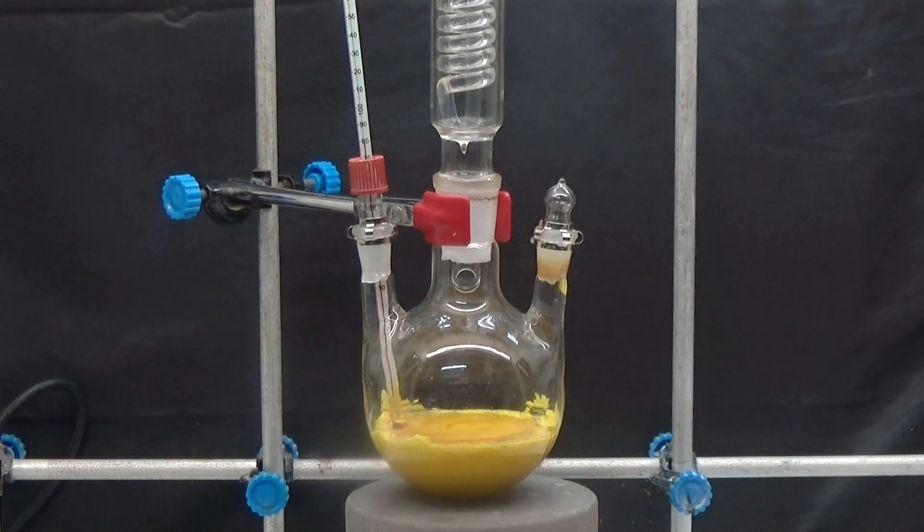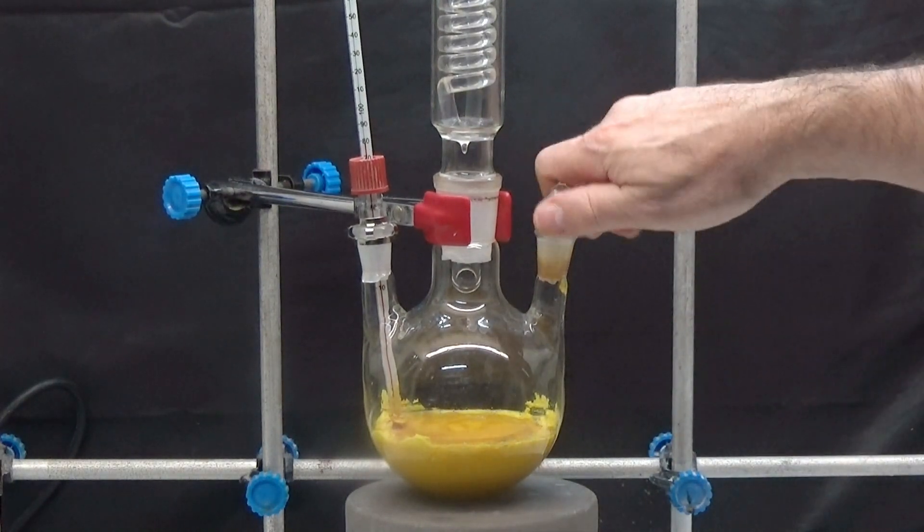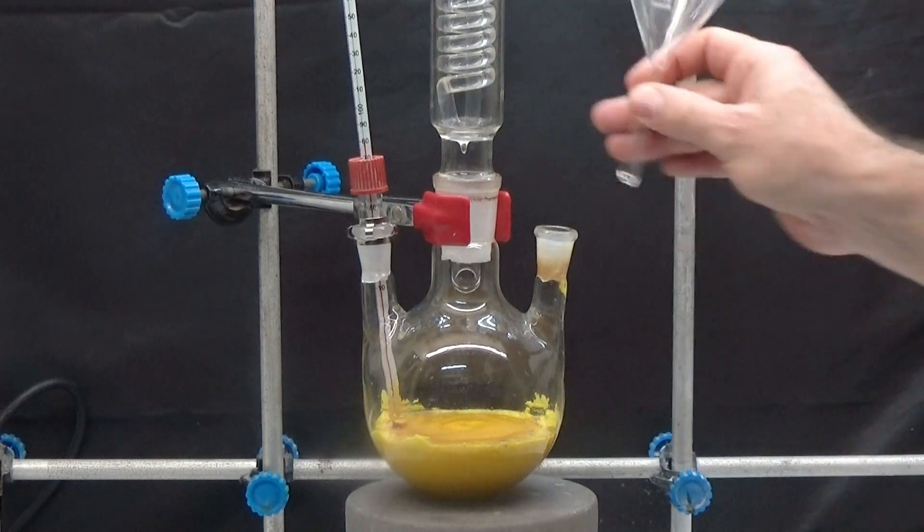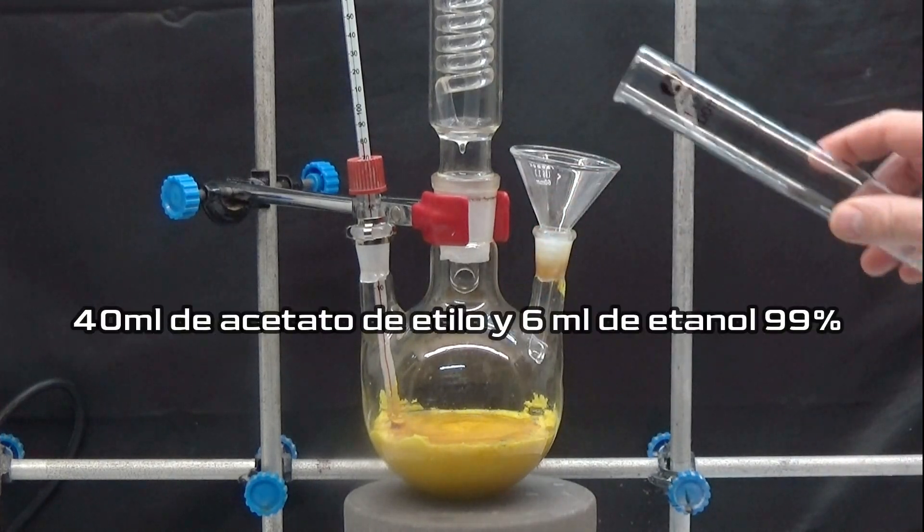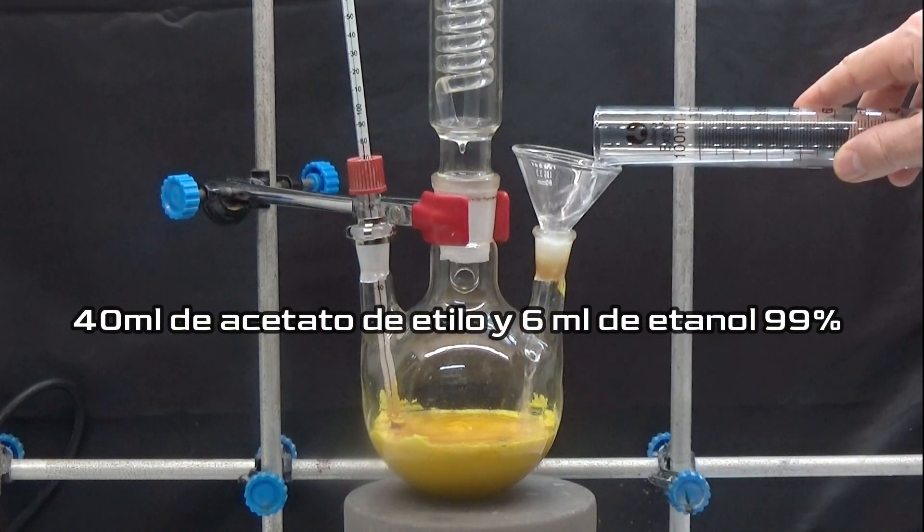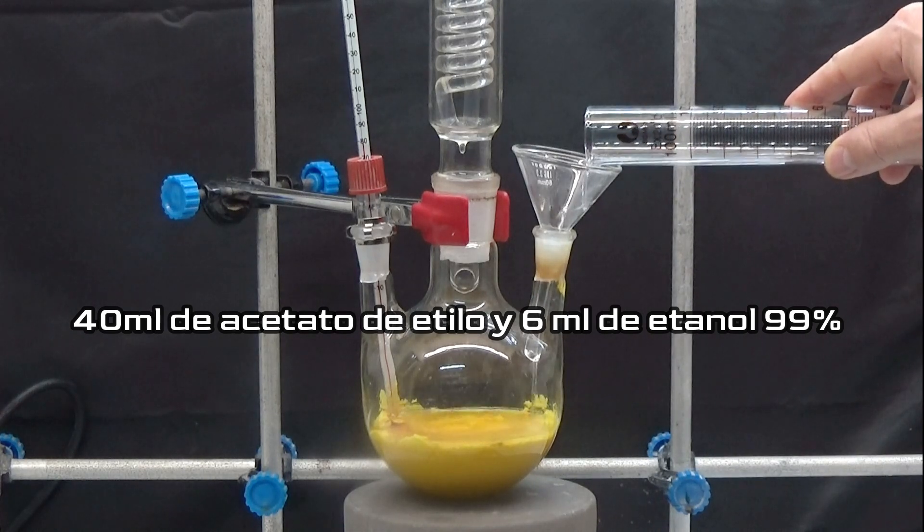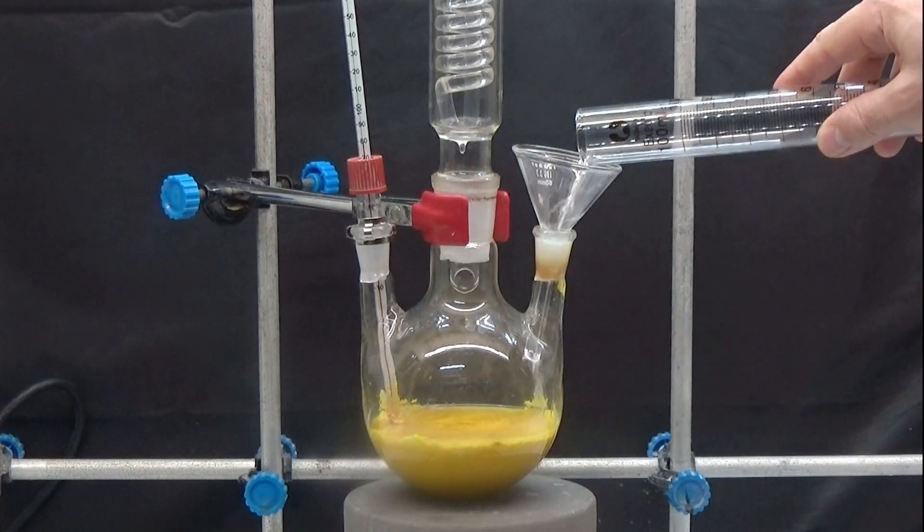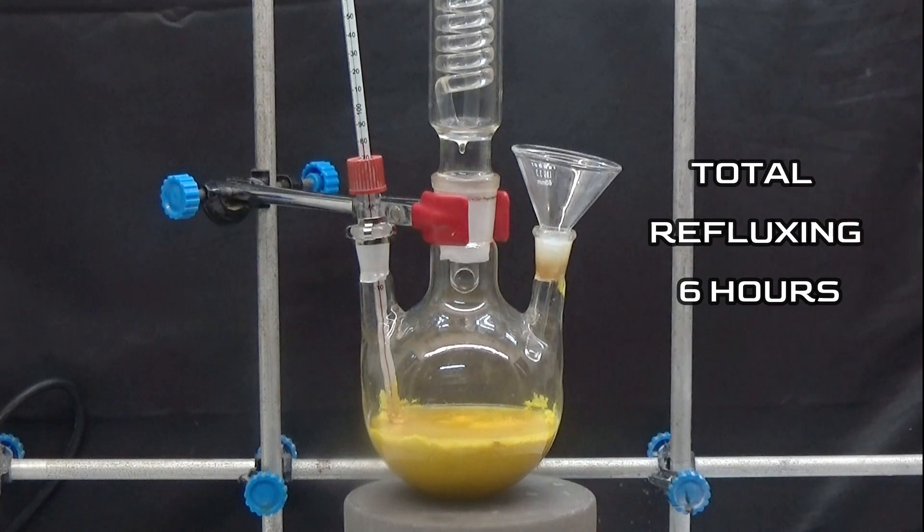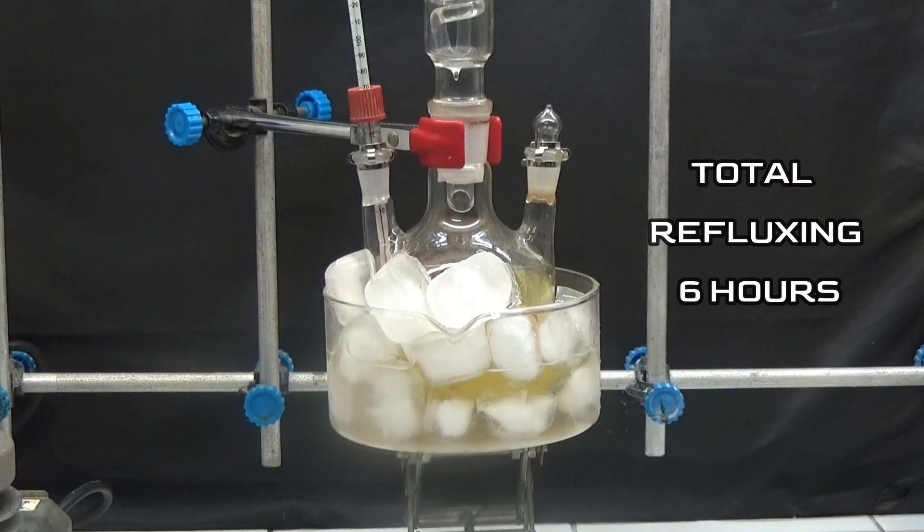The product becomes yellow in color and very thick after 3 hours of refluxing. To remove any unreacted sodium, mix and add 40ml of ethyl acetate and 6ml of 99% ethanol. Allow to cool after 6 hours of refluxing.